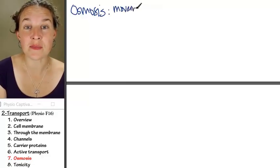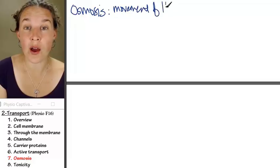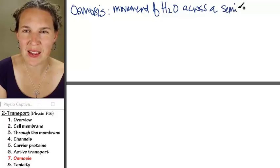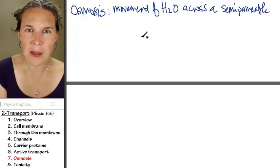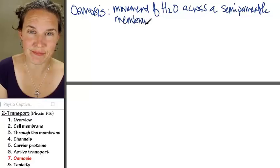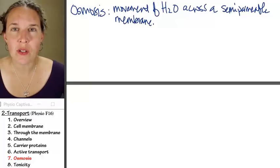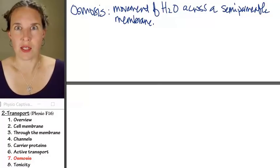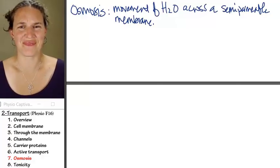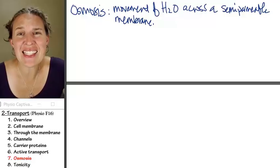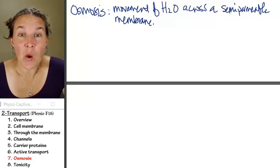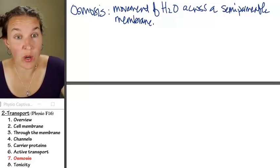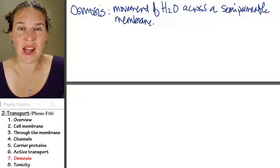Osmosis is the movement of water across a semipermeable membrane. Now, go ahead and think this through. What is a semipermeable membrane that we might be talking about? How about the cell membrane? Water moving across a cell membrane or any semipermeable membrane, that's osmosis.